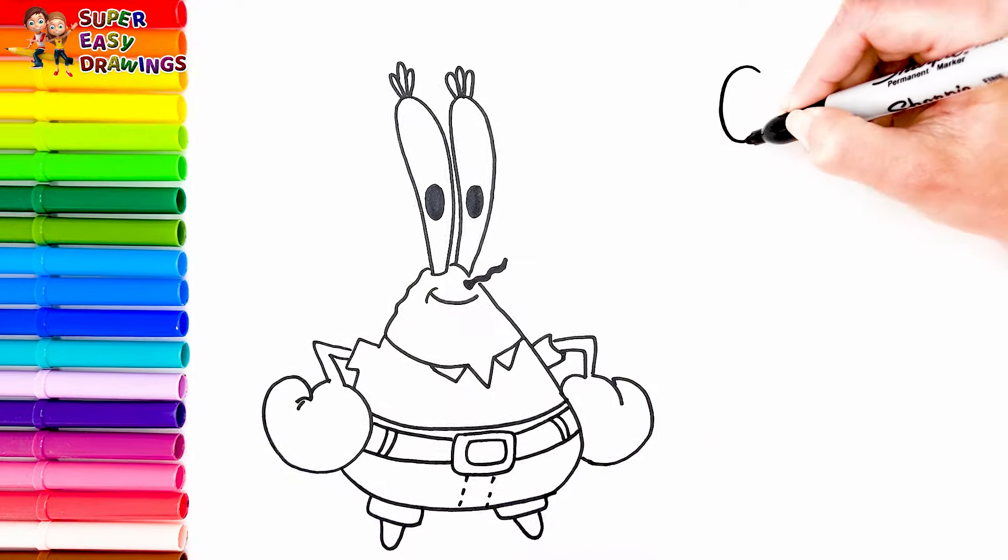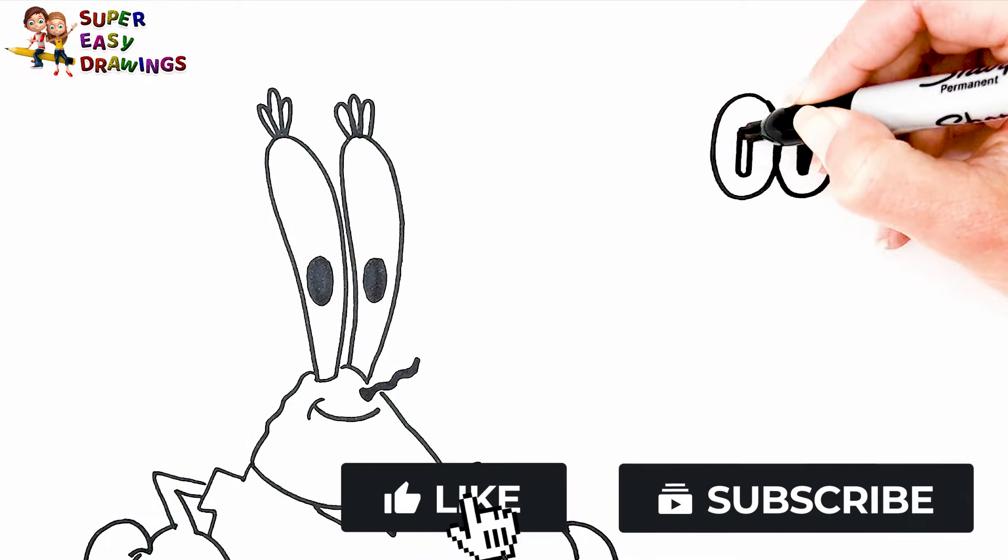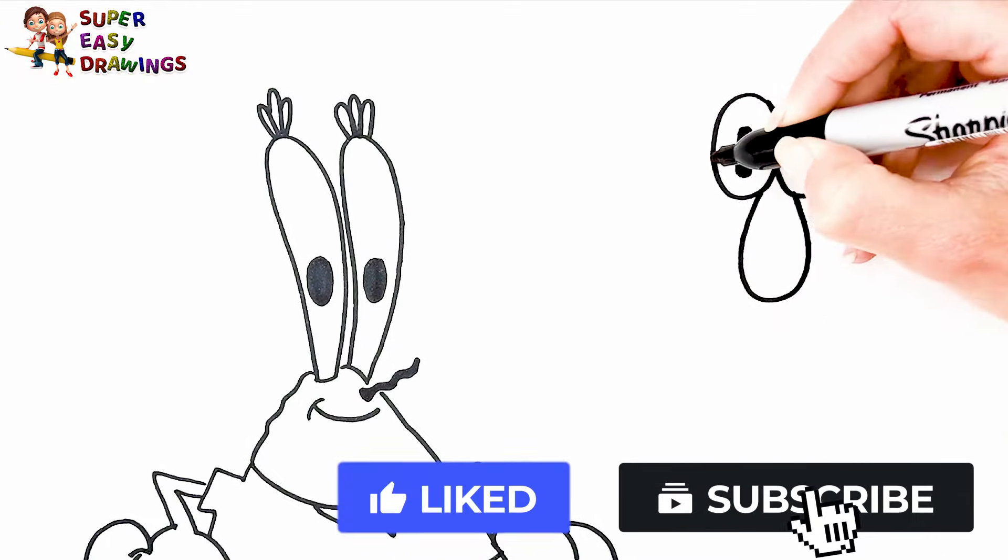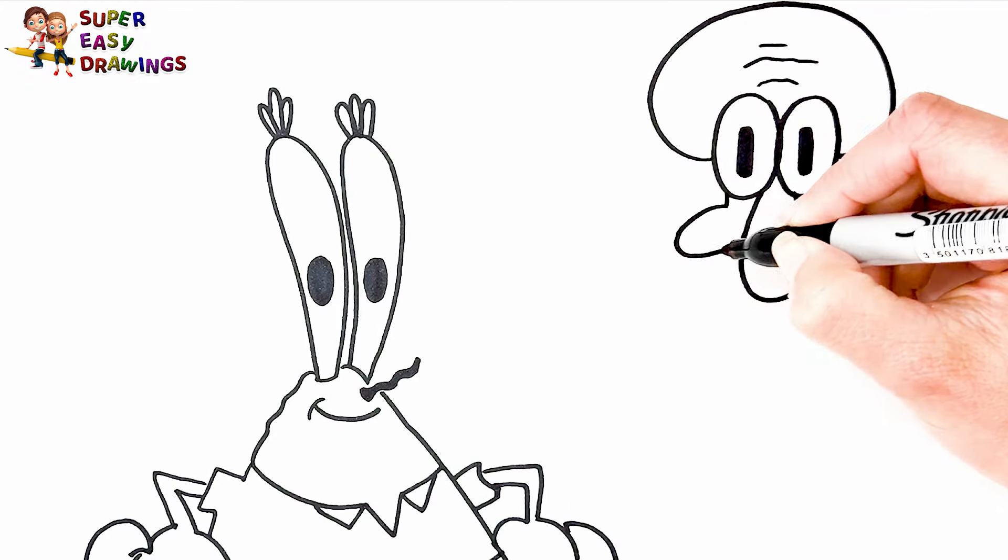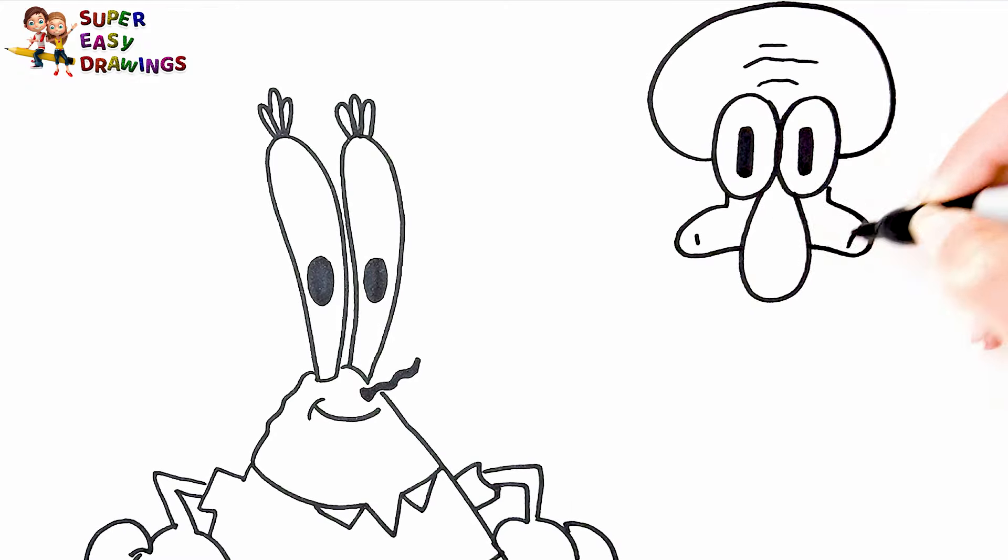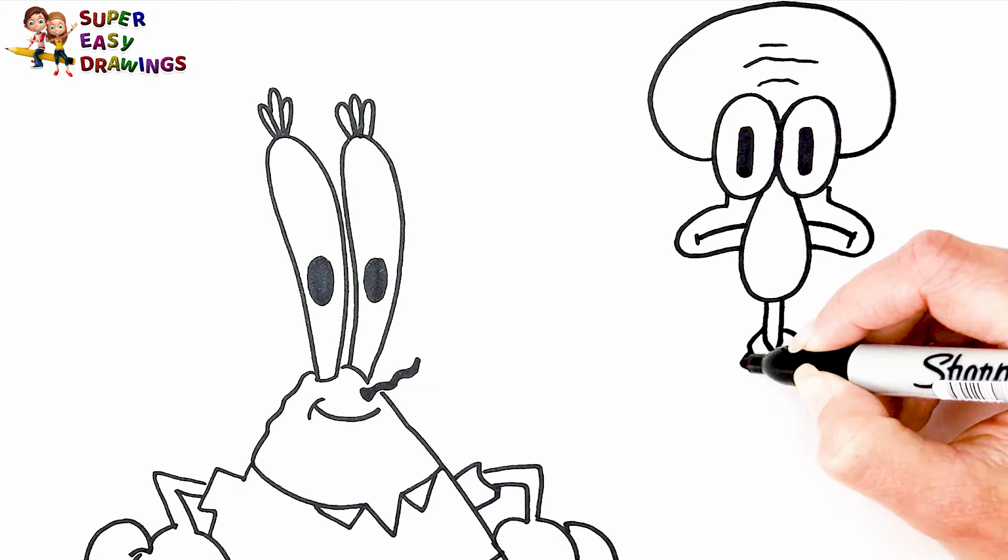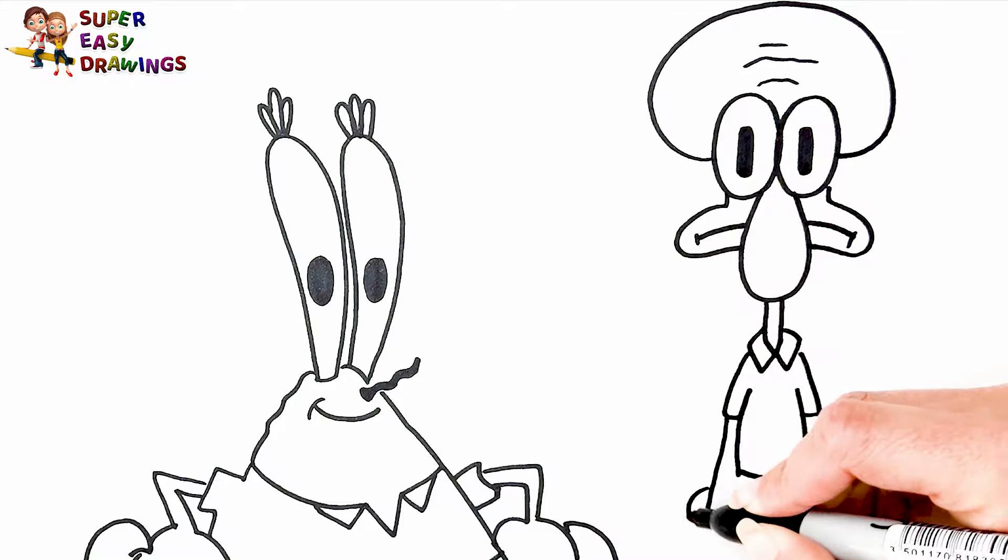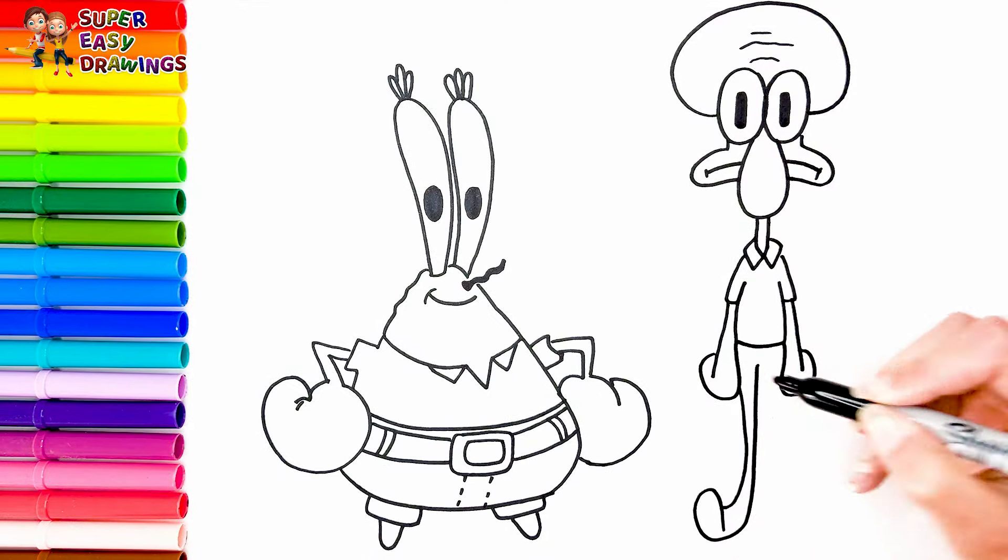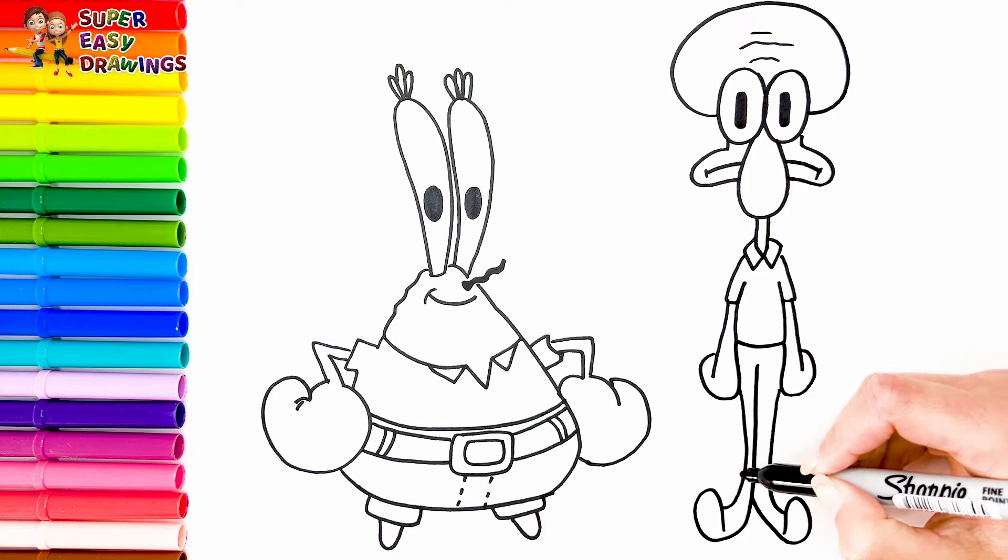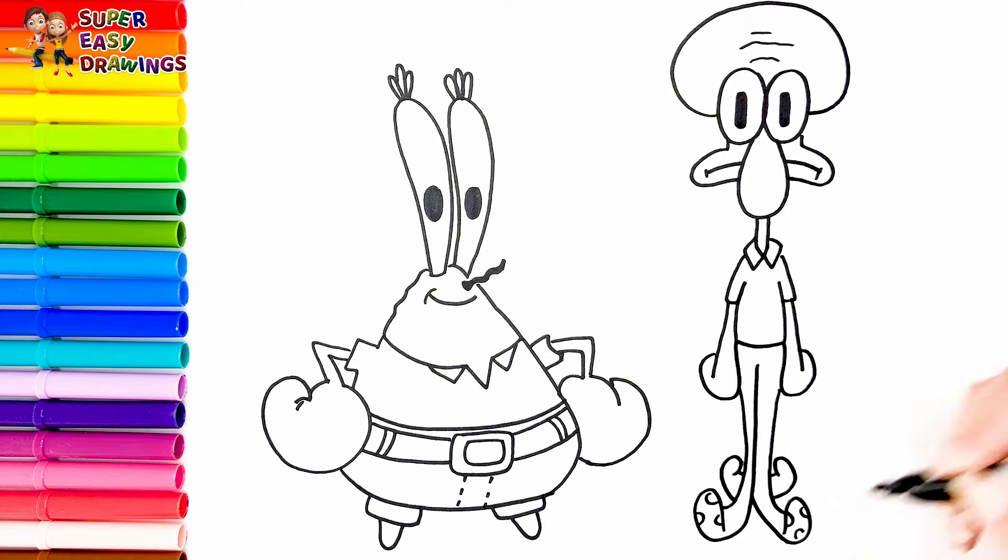Let's draw Squidward Tentacles. I start with his eyes. Then I draw his big nose, then I draw the shape of his head and his grumpy mouth. And his long neck and shoulders. I draw his body and his arms and finally his legs. Great!